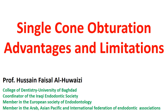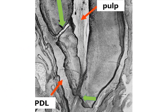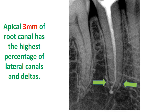Single cone obturation: advantages and limitations. The apex of the root is not only the apical foramen; there are lateral canals mostly present in the apical three millimeters of the root canal, which has the highest percentage of lateral canals and deltas.